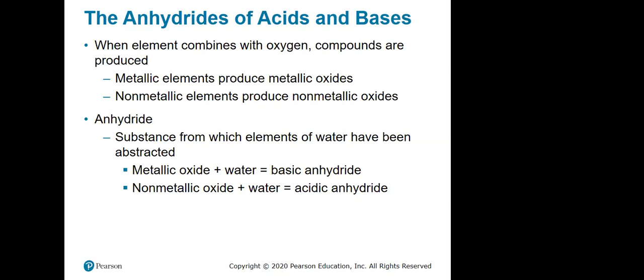We also talked about where acids and bases come from, the anhydrides. The anhydrides themselves are basically acids and bases without water. If I take a basic substance, extract out the water, I'd be left with some sort of metallic oxide. Something like magnesium oxide, if I put it in the presence of water, would turn it into magnesium hydroxide, which is a base.